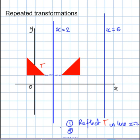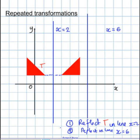What about the second one? Reflect in the line. Sorry about the handwriting here, it's not very good. x equals 6. So first I draw my line x equals 6, which is going to be here. So there's line x equals 6.